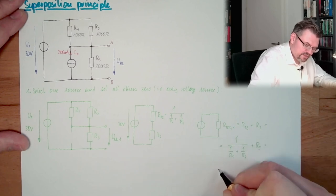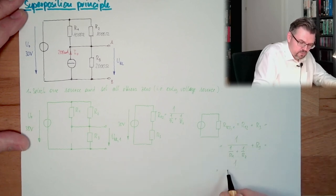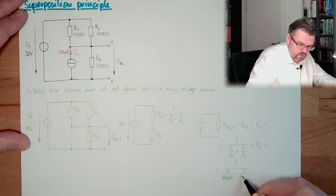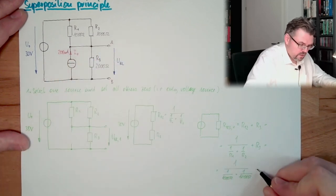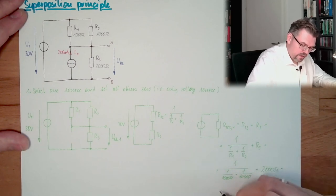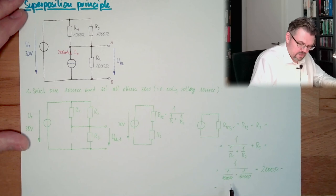So actually if I put this further it's 1 divided by 1 divided by R1 plus 1 divided by R2 plus R3. Now let's get to the numbers. 1 divided by 1 divided by 1,000 ohms plus 1 divided by 1,000 ohms. R1 and R2 are both 1,000 ohms plus 2,000 ohms.